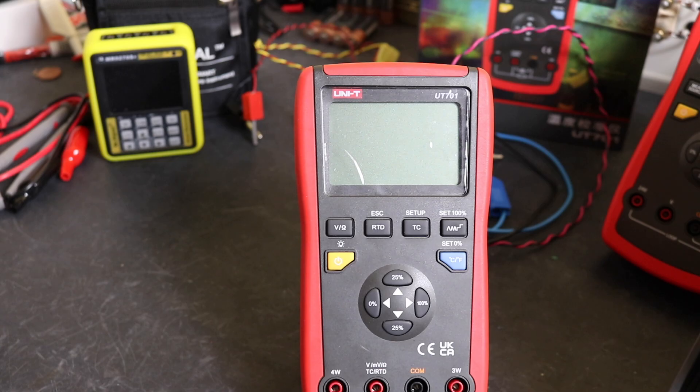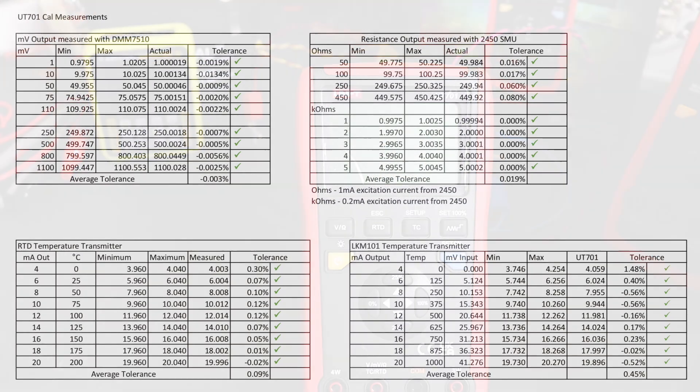Okay. So these are my test results here. In these tables, the values that you see here will be slightly different to the ones you see in the video because I waited for everything to warm up and come to temperature, including the transmitter, left everything powered up for an hour to let everything stabilize. So the results are slightly different in these tables. And on the top left there, we've got the millivolt output measured with the DMM 7510. Everything is just slightly low, but all within tolerance, ending up with an average tolerance of minus 0.003 percent. That's a good set of values there.